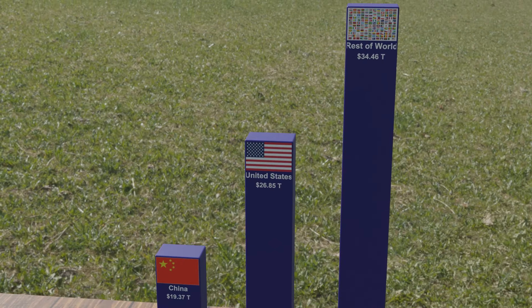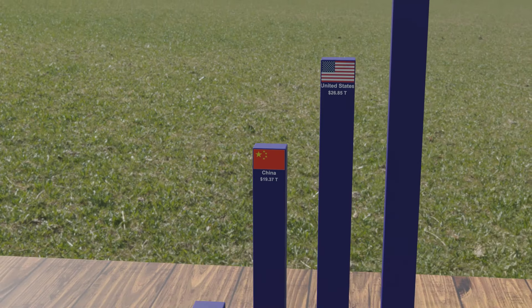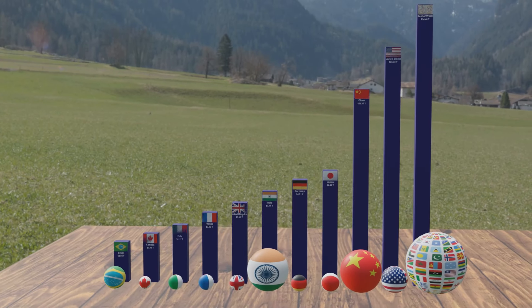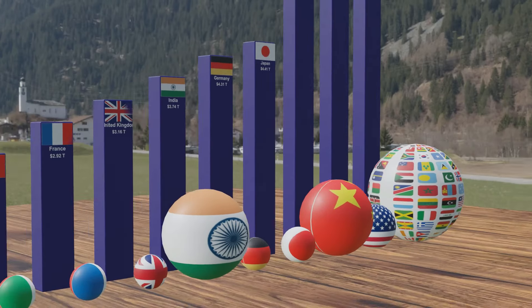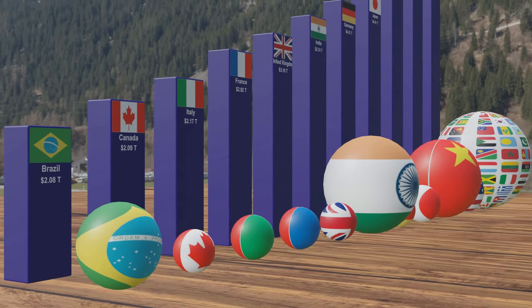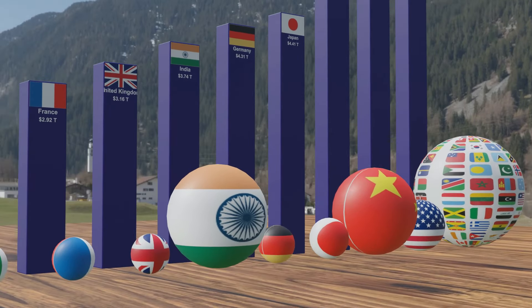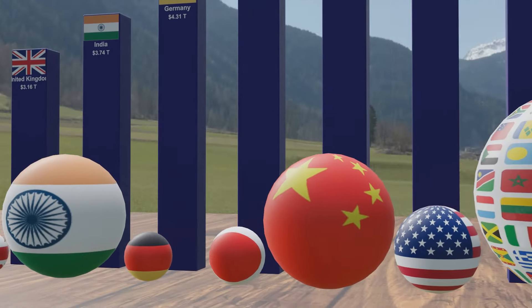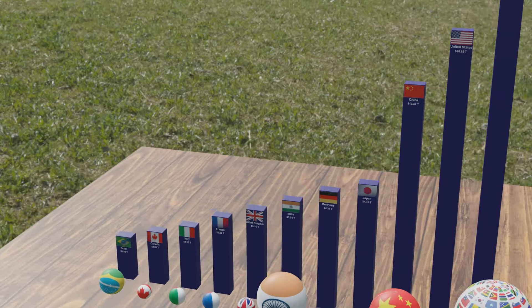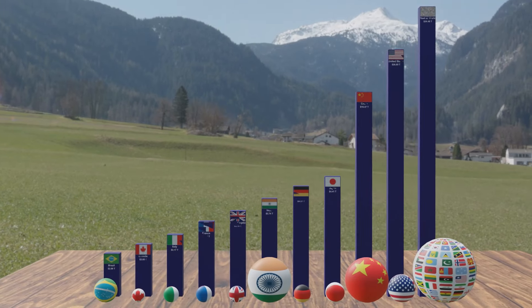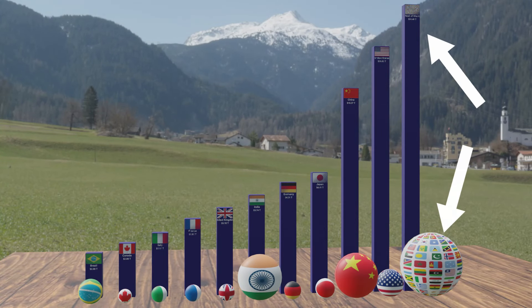The last bar and sphere in the animation shows the combined GDP and population size of the rest of the world, which excludes the previous top ten countries. The combined population and GDP of all the countries not in the top ten is larger than any individual country.